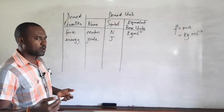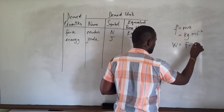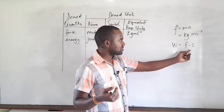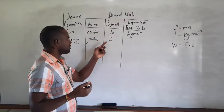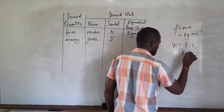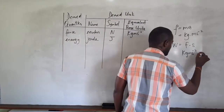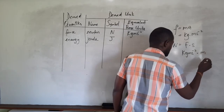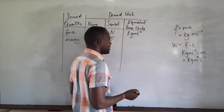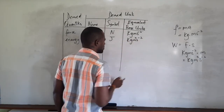Since work and energy are directly related, we use: work done W equals force times distance. The SI unit of force is kilogram meter per second squared (as we derived for the newton), and we multiply by the unit of distance, the meter. This gives kilogram meter squared per second squared, which is the base unit equivalent of the joule.